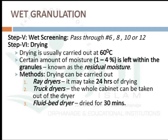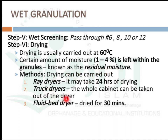The next step is wet screening. After producing the wet mass, it is passed through sieve number 6, 8, 10, or 12. After that, it is dried at a temperature of less than 60°C. Drying time depends on the amount of granules — usually 24 hours in tray dryers. In fluidized dryers it is the fastest method, completing within 30 minutes.